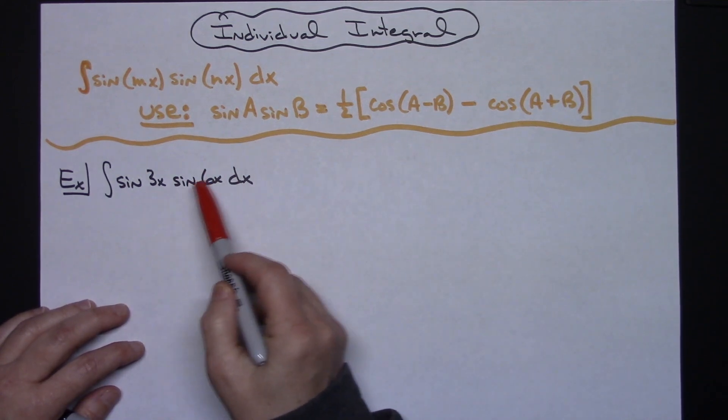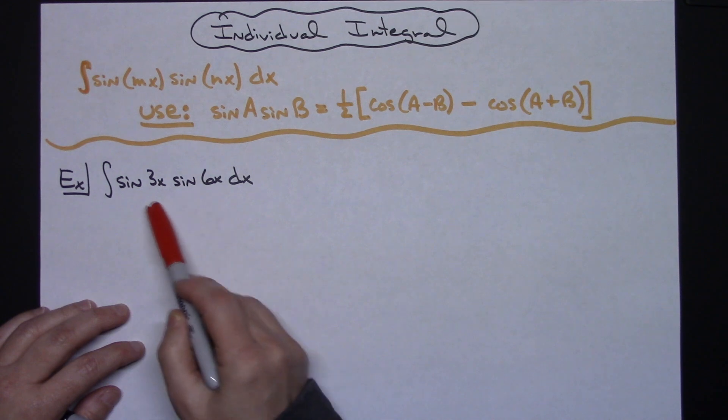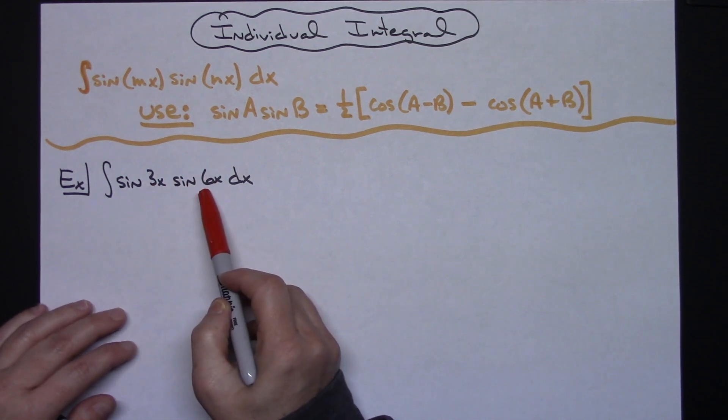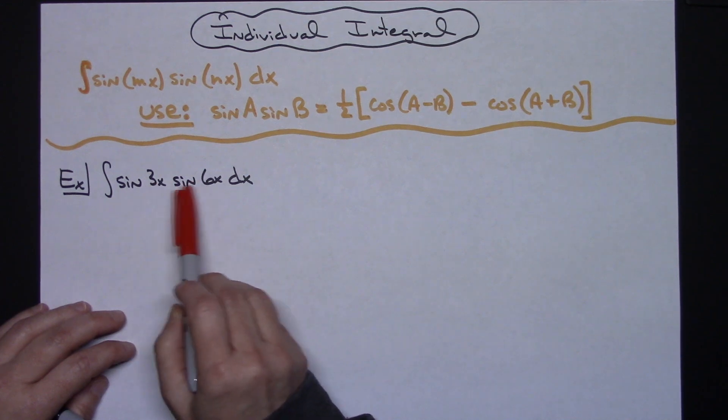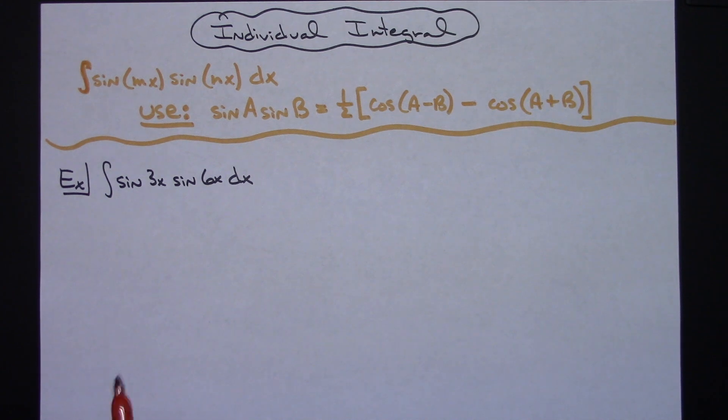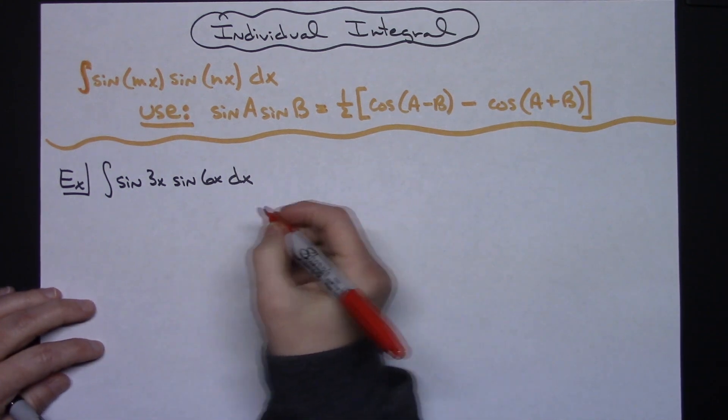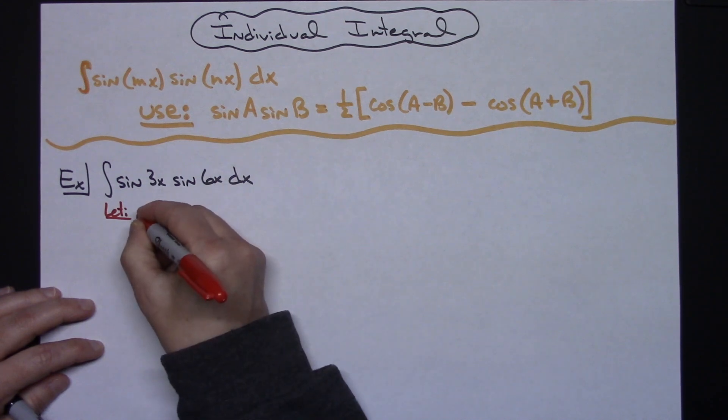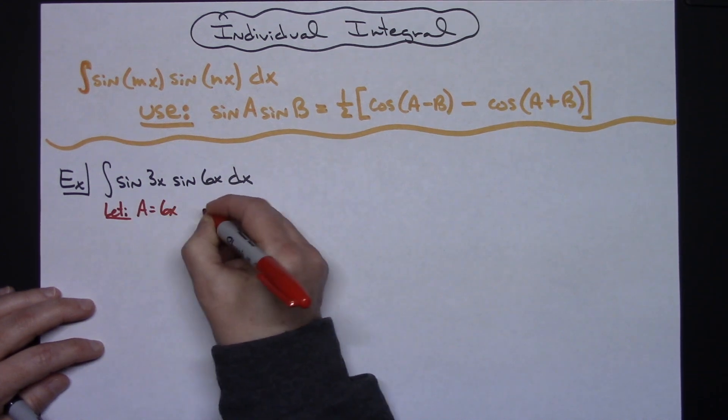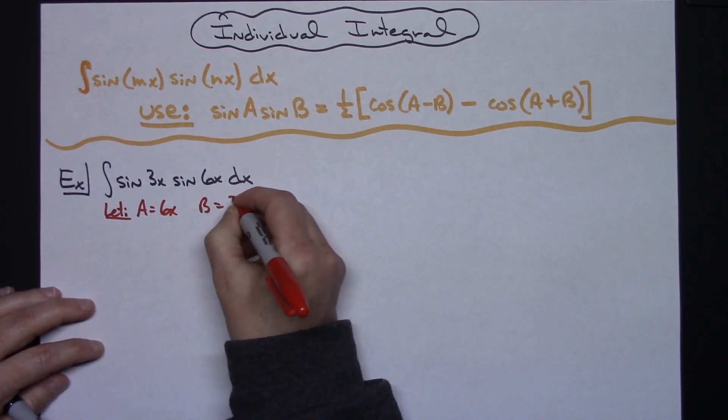So you can choose which one of these is going to be your a and b, because technically I can multiply any two things in any order. So if I want the 6x to be the a, I could have written this integral as the sine 6x sine 3x dx. So with that being said, I am going to let my a be the 6x and my b be the 3x.